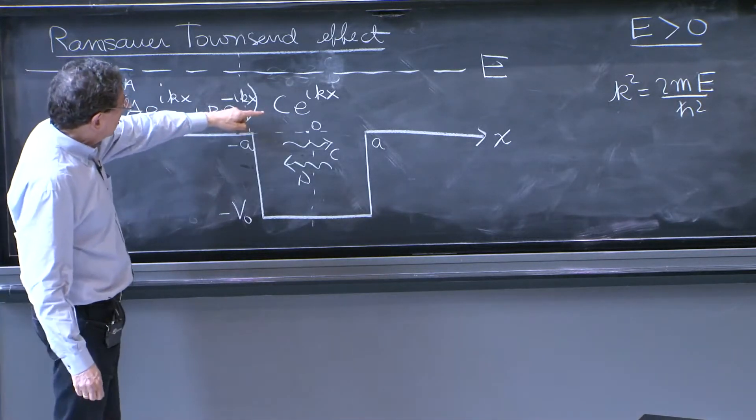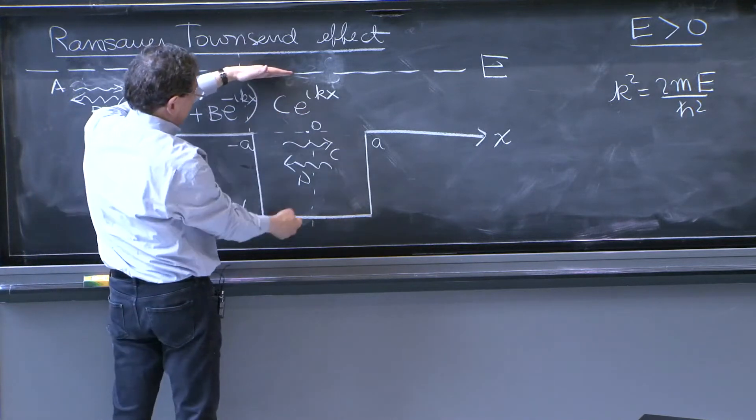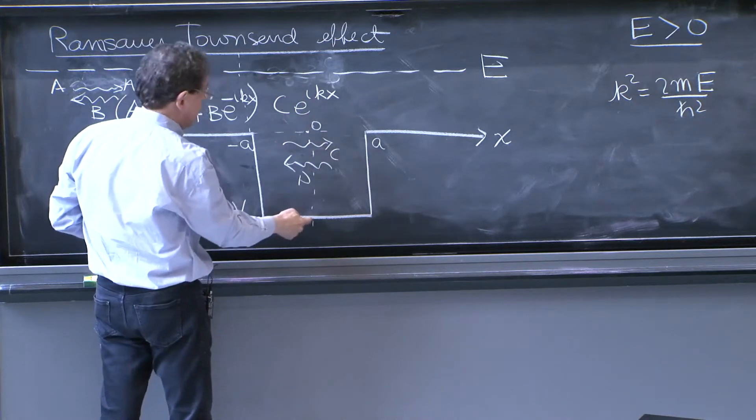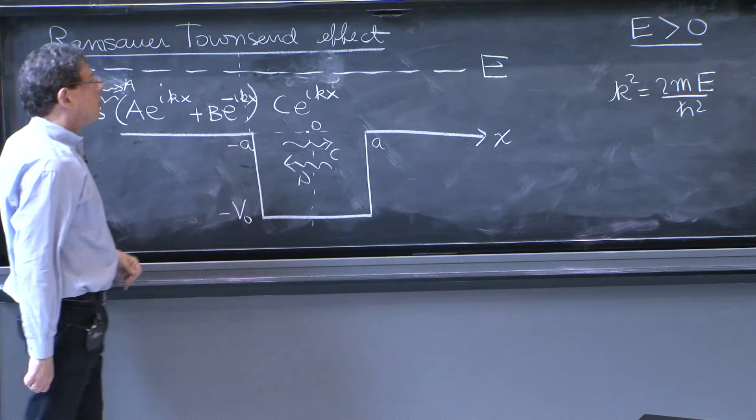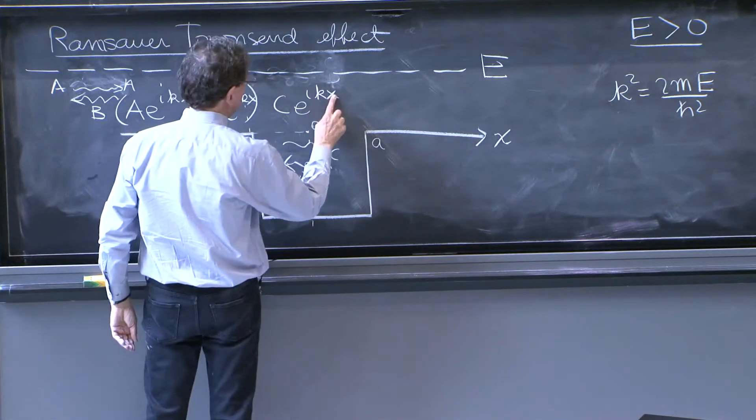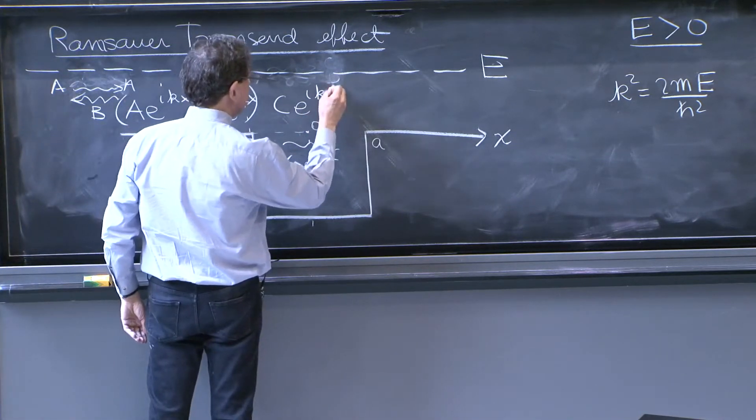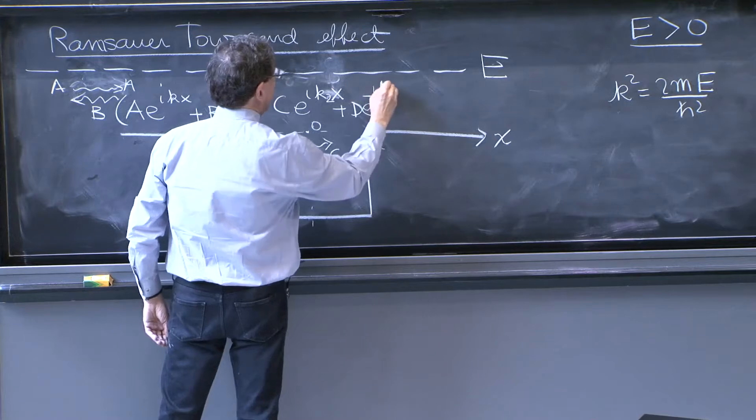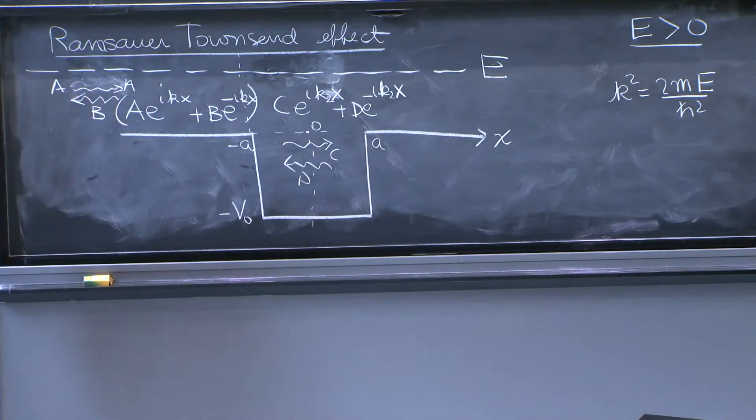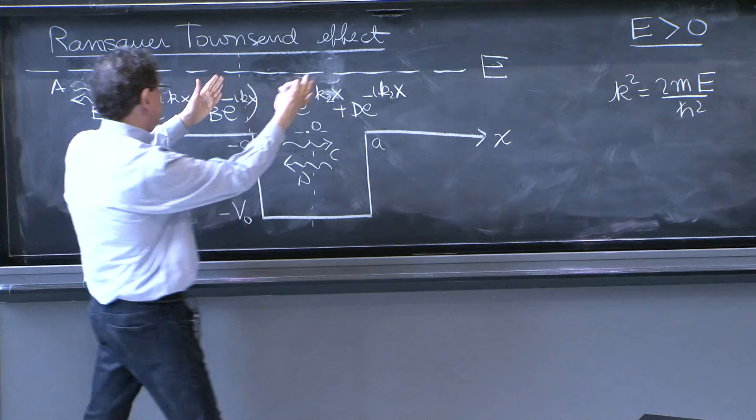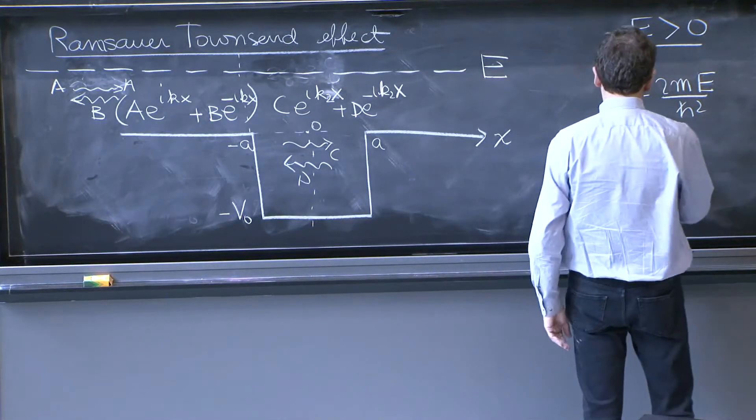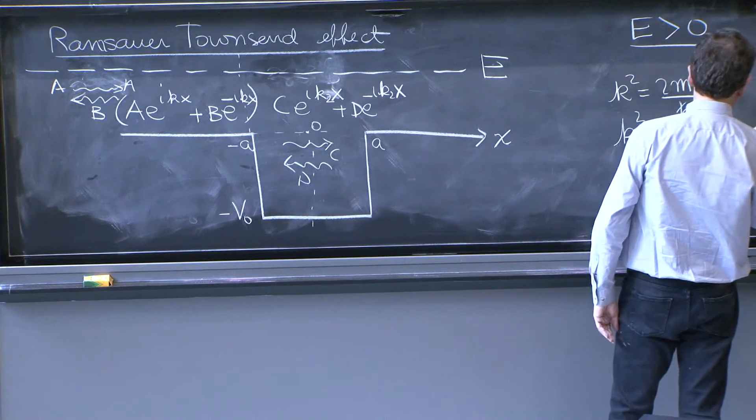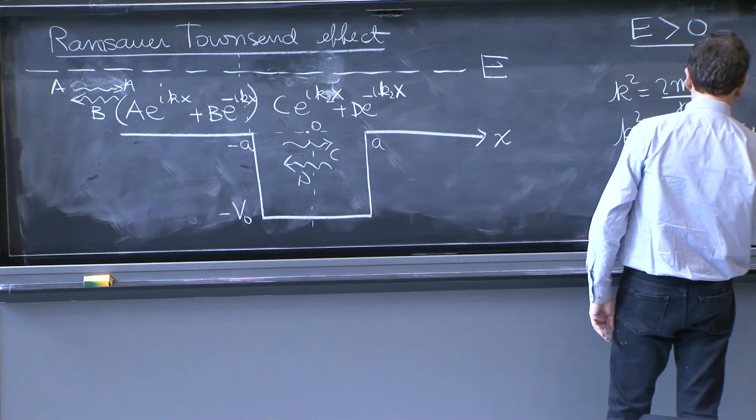But at this point, the total energy, kinetic energy of the particle is bigger. It's as if e is replaced by e plus V0, which is the magnitude of this drop. So here, there will be a k2, called k2x, plus d e to the minus ik2x. And k2 refers to this region 2, presumably. People use that name. k2 squared would be 2m e plus V0 over h squared.